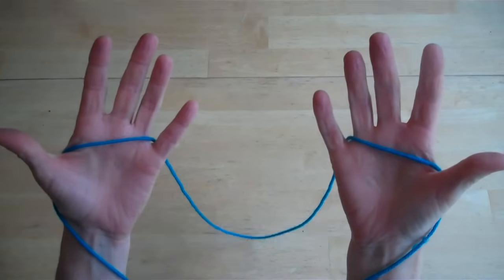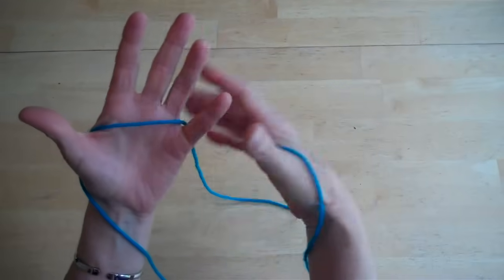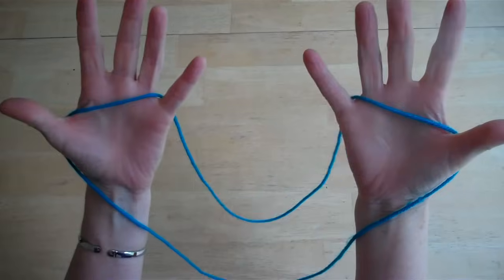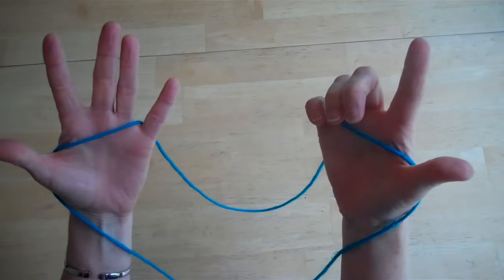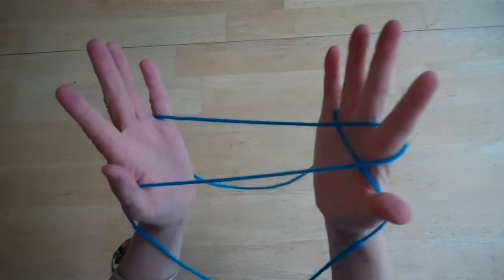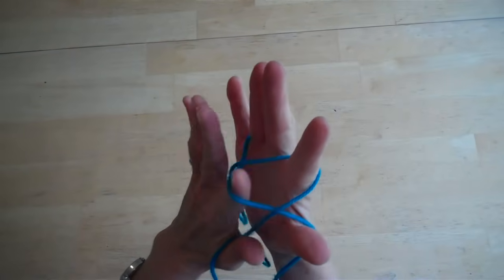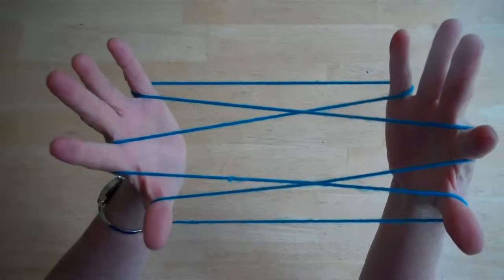To make the rabbit, you start off in the standard position with the string over your palms and over your pinky and thumb. You use your pointer finger and pick up the opposite palm string on each side. It's just a regular opening.